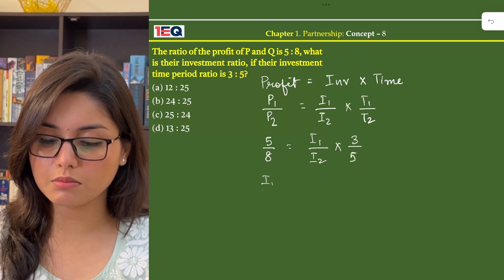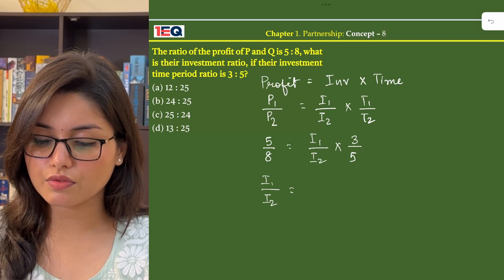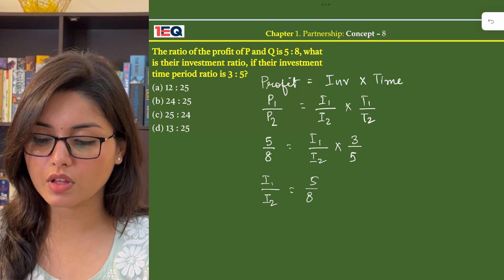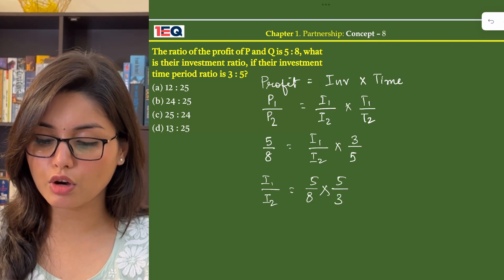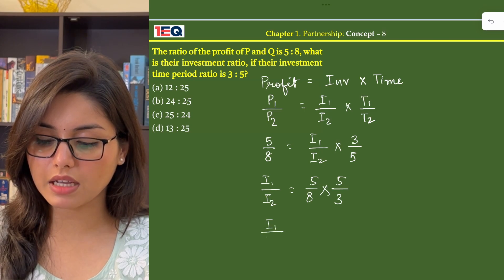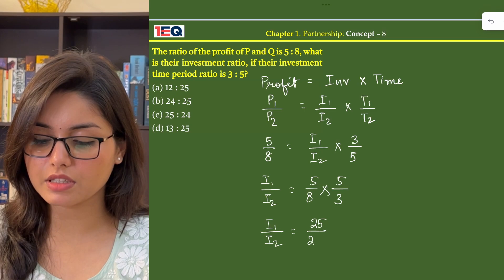Now we bring I1 by I2 one side. So 5 by 8 into 5 by 3. So the value of I1 by I2 is 25 by 24.